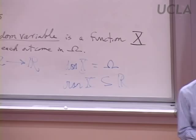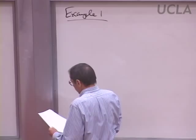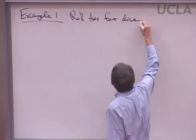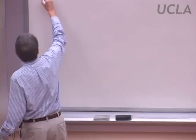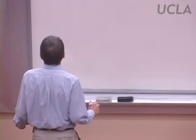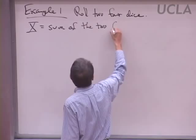It will help a lot if we look at some examples. Here are five examples. Say the experiment consists of rolling two dice — fair dice — a red one and a blue one. For a random variable, we could just take the sum of those two faces.